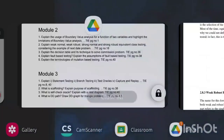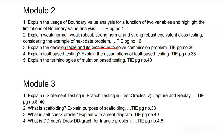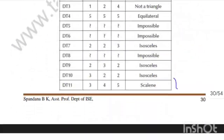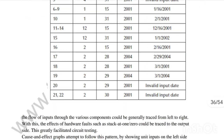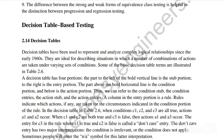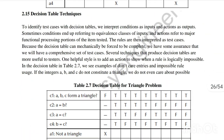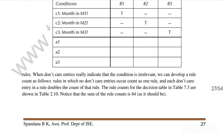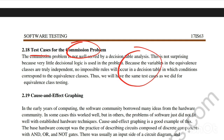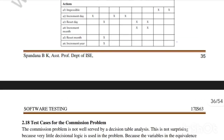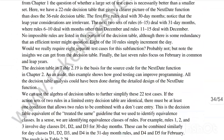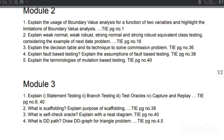The next question is: explain the decision table and its technique to solve the commission problem. While the commission problem can be solved in two or three ways, the question specifically asks about the decision table technique, found at page number 25 or 26. The test cases for the commission problem using decision tables are present there. Refer to additional documents as needed, but the answer revolves around the decision table and commission problem content at those pages.